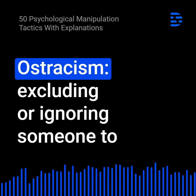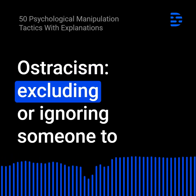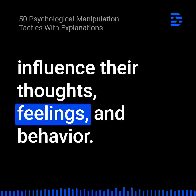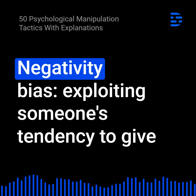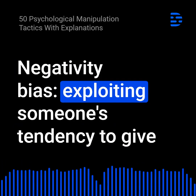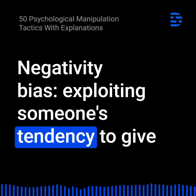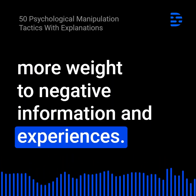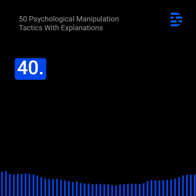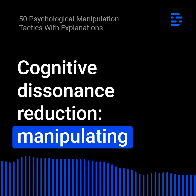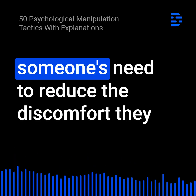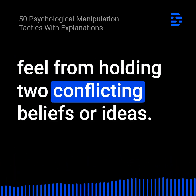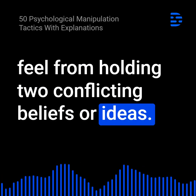38. Ostracism: Excluding or ignoring someone to influence their thoughts, feelings, and behavior. 39. Negativity bias: Exploiting someone's tendency to give more weight to negative information and experiences. 40. Cognitive dissonance reduction: Manipulating someone's need to reduce the discomfort they feel from holding two conflicting beliefs or ideas.